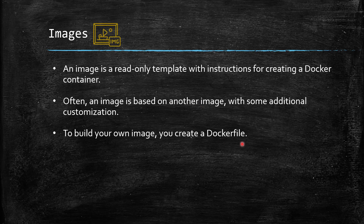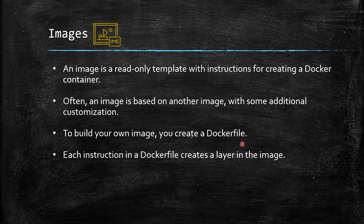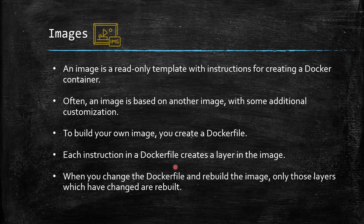When you create a new image, you create a Dockerfile. Each instruction in a Dockerfile creates a layer in the image. When you change a Dockerfile and rebuild it, only the layers that changed are rebuilt — the rest are untouched. That's what makes this whole system very lightweight.